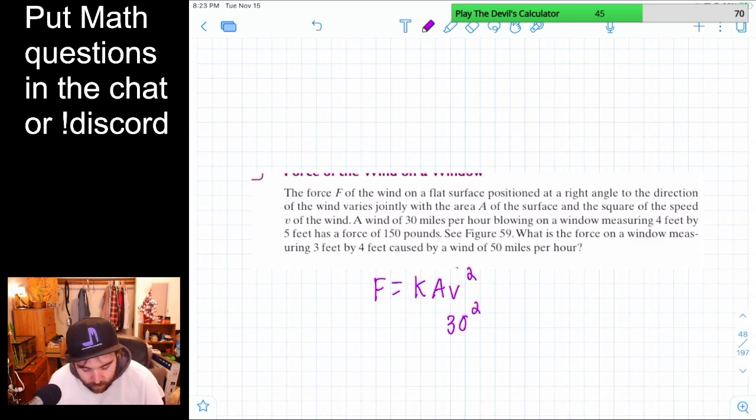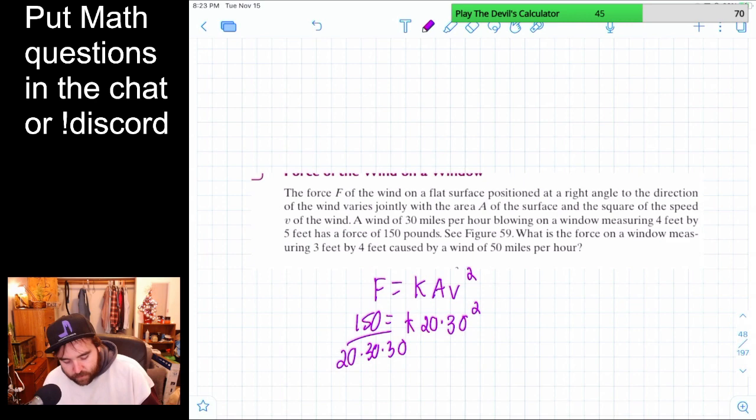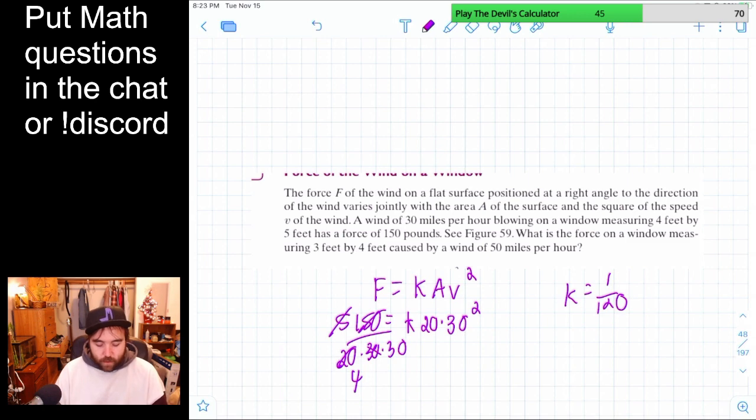Oh, gosh. We're definitely not. Maybe the units don't matter, though, right? Because the units will just be captured in the K. That's probably true, actually. So a wind of 30 miles per hour, so 30 squared. Blows on a window measuring 4 by 5, so that's 20. That's it, right? And K has a force of 150 pounds, equals 150. So then we just have to divide by 20 times 30 times 30. So we're going to cancel out this 30 and make that a 5, cancel that out and make that a 4. So K is 1 over 20, 1 over 120, that's 4 times 30. So that's our formula, is A V squared over 120.